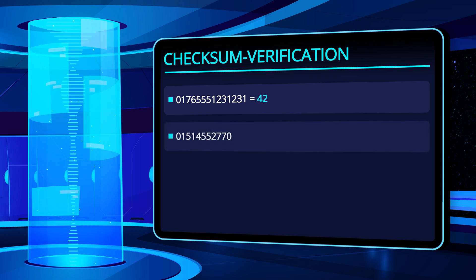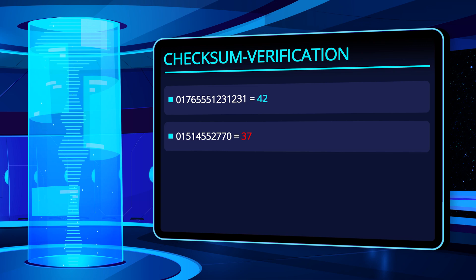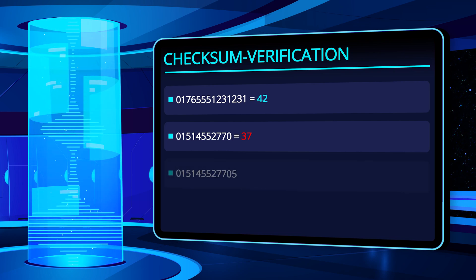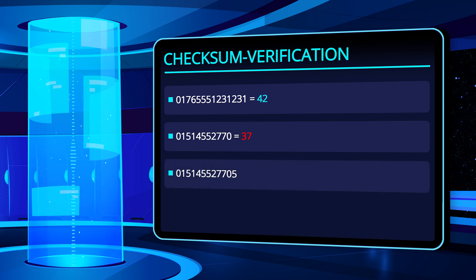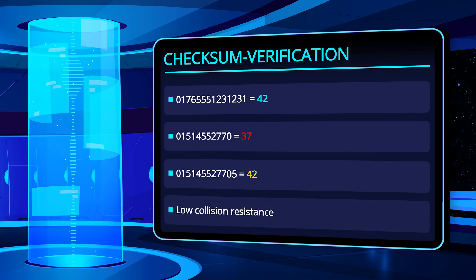If a third party wants to give us a modified file — for example containing a different phone number — the checksum will be different. We can easily see that the known checksum 42 does not match the file in question and that it must have been modified. However, the checksum calculation based on a cross sum is not very secure. For example, the cross sum remains the same if a number is transposed, or numbers can be added to the wrong phone number so that the checksum fits again. This is referred to as low collision safety.